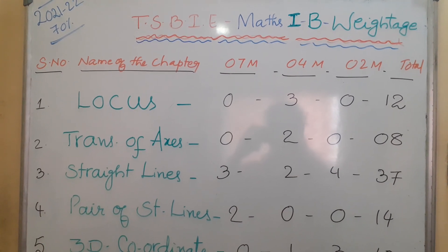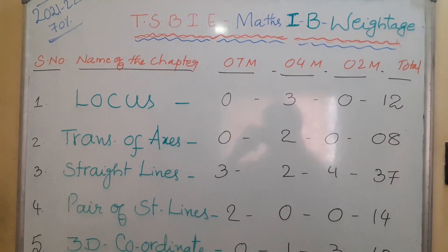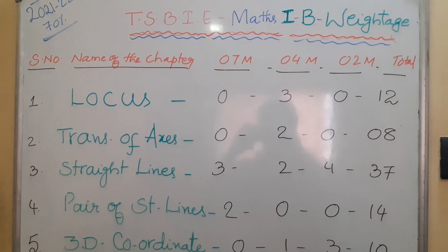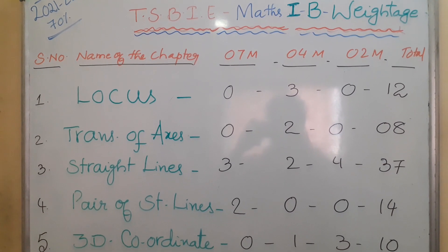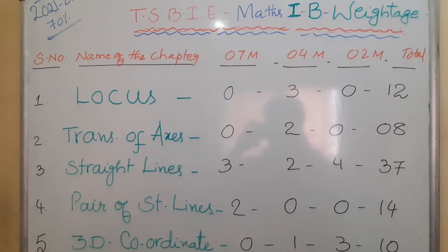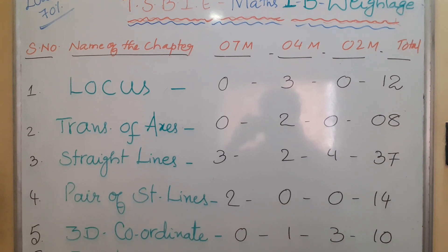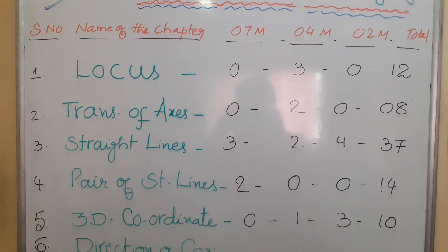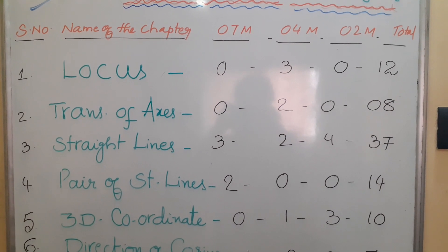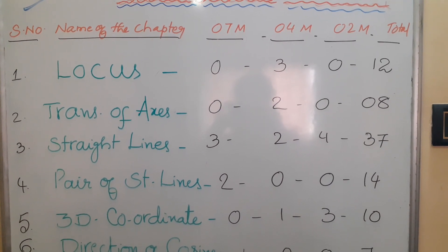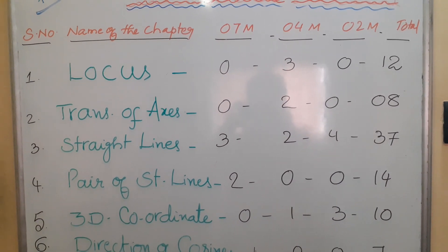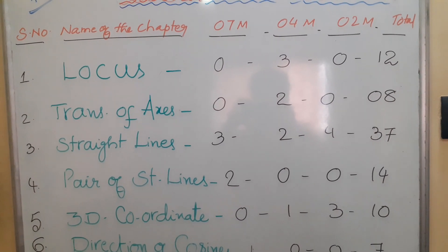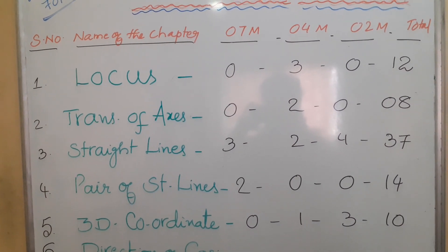Totally we have 10 chapters. The first one is Locus. From Locus, no 7-mark questions; 4-mark questions: 3; 2-mark questions: nil. So 4 threes are 12 marks — the weightage for Locus is 12 marks. Second one is Transformation of Axis. From this chapter, no 7-mark question, no 2-mark question, only 4-mark questions: 2. So 2 fours are 8 marks — chapter weightage is 8 marks.